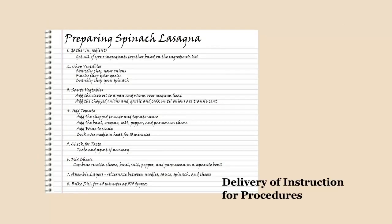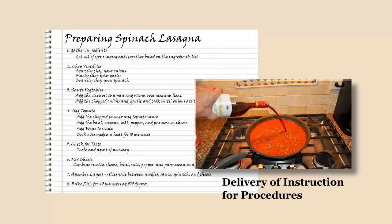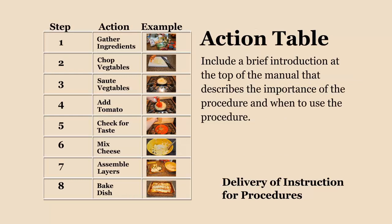When procedures are taught in the classroom, it's not uncommon to provide a manual that the learners can follow as an instructor demonstrates the procedure. Often this is followed by hands-on practice for the learners. As an instructional designer who may develop the manual for a procedure, construct a manual that uses an action table. Action tables are often characterized as containing three columns: a step, an action, and an example. The manual can be laid out with a brief introduction at the top describing the importance of the procedure and when to use it, followed by the action table. If your manual uses illustrations, be sure to keep them close to the words that describe them.